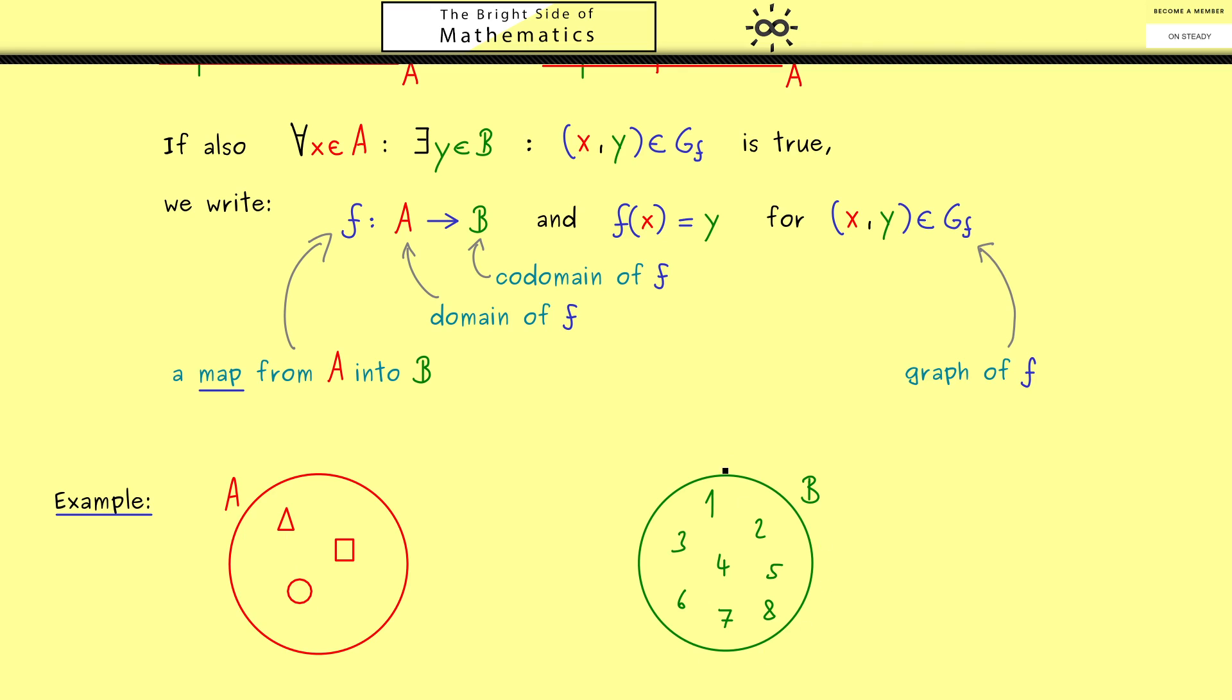And the set B is just a collection of some numbers. Now the visualization for the map f would be something that goes from left to right. In fact, we could completely define the map by just drawing the lines from left to right. So here the triangle is mapped to the number 1. When we don't have the picture, we need to write this as f(triangle) = 1.